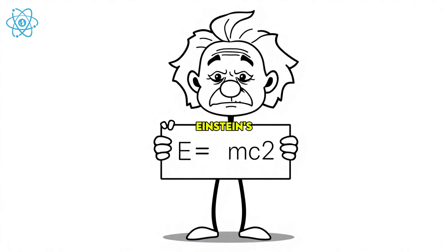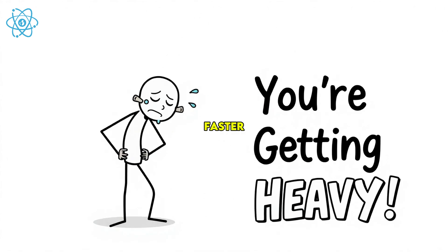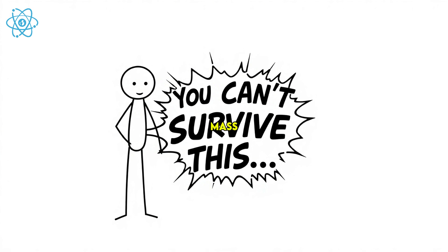And according to Einstein's theory of relativity, as your speed increases, so does your relativistic mass. So the faster you go, the heavier you get. At light speed, your mass becomes infinite. Which means you need infinite energy to move.